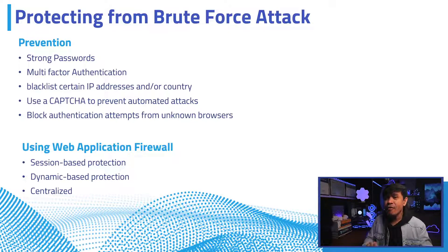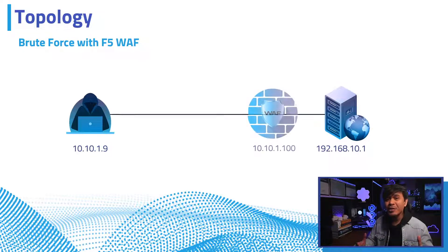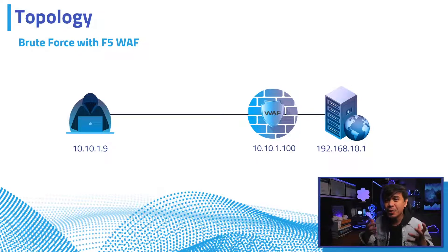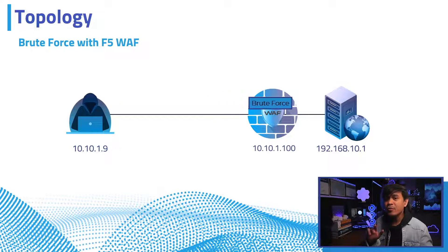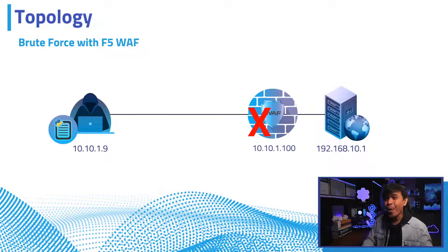We've added an appliance to our topology. There is now an F5 web application firewall between the two nodes — a WAF between the attacker and the target web server. First, we'll show you the web security policy and create a brute force configuration. Then from the attacker side, we'll test manually if the brute force configuration with CAPTCHA redirection really works. Then we'll run a brute force Python script and see if the attack is detected and mitigated.